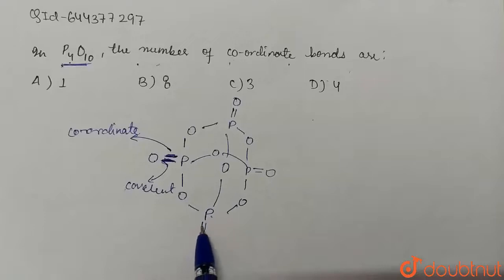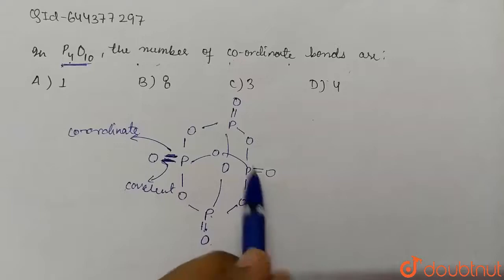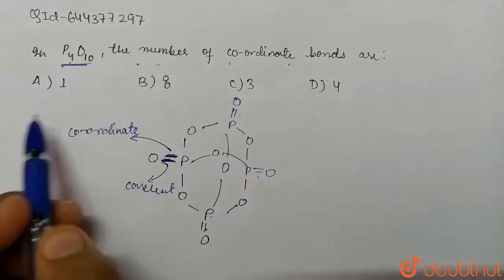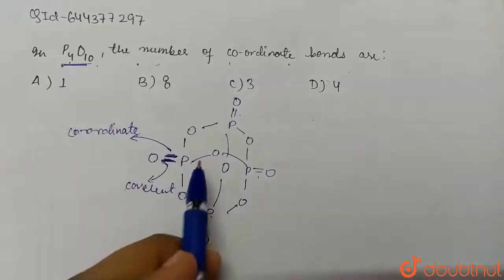Here we have one coordinate bond present. Similarly, here between this P and O we have one covalent bond and another as coordinate bond, so we have two coordinate bonds. Similarly here three, and then we have four.